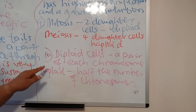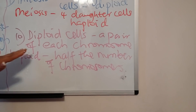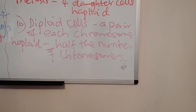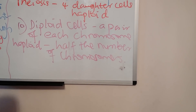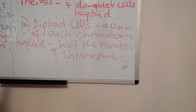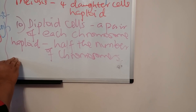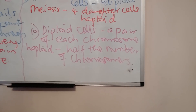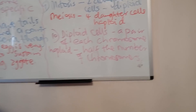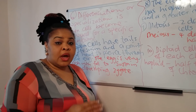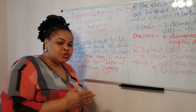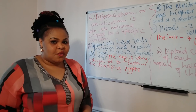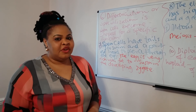Number ten: diploid cells have a pair of each chromosome, so chromosomes occur in pairs. In human cells, that's 46 chromosomes or 23 pairs. Haploid cells contain half the number of chromosomes of the parent cell. Wait for questions 11 to 20, and I'll go on until I've gone through all 100 questions. See you in the next video.